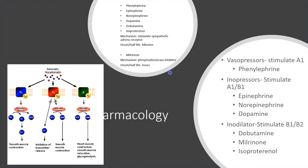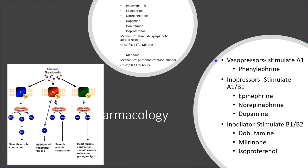We classify catecholamines by effect. Vasopressors increase systemic vascular resistance through alpha-1 — the only pure vasopressor is phenylephrine. Inopressors stimulate alpha-1 and beta-1, increasing inotropy and vasoconstriction — these include epinephrine, norepinephrine, and dopamine. Inodilators increase contractility and heart rate through beta-1 but decrease SVR through beta-2 — these include dobutamine, milrinone (which increases cGMP leading to nitric oxide and vasodilation), and isoproterenol (which stimulates beta-1 and beta-2).